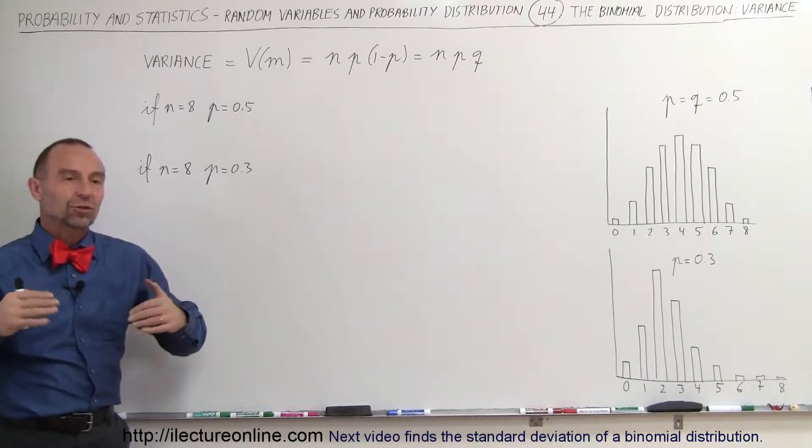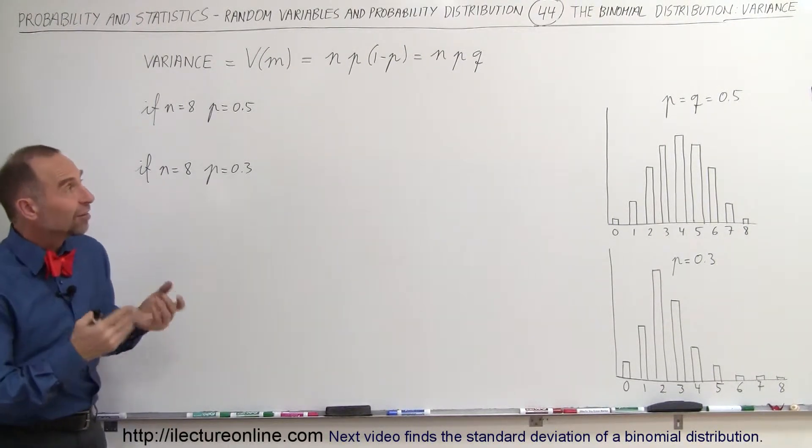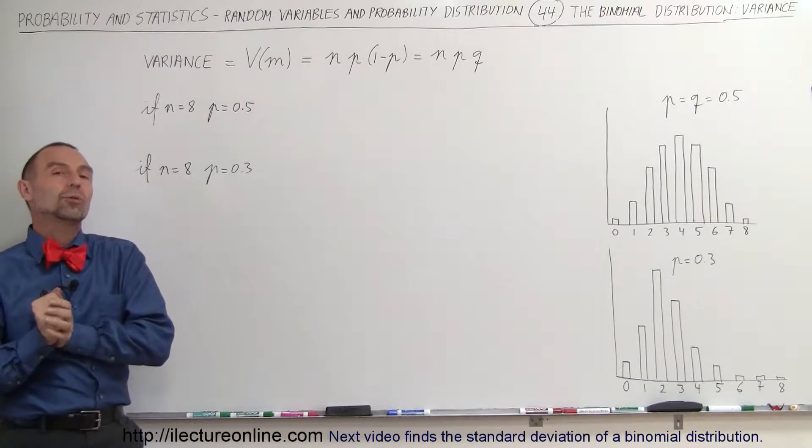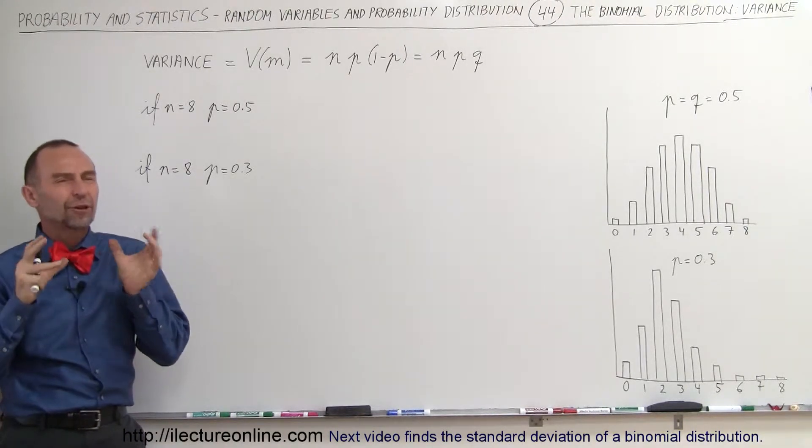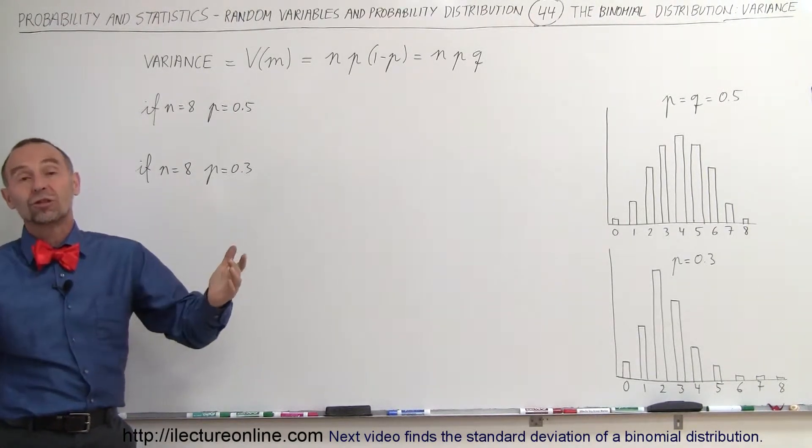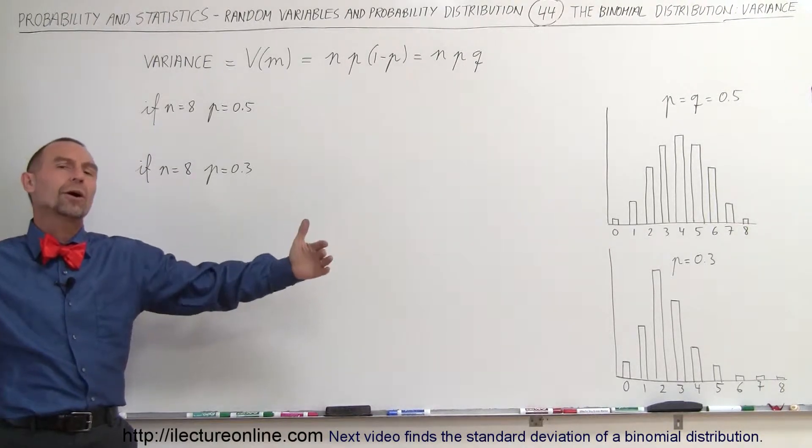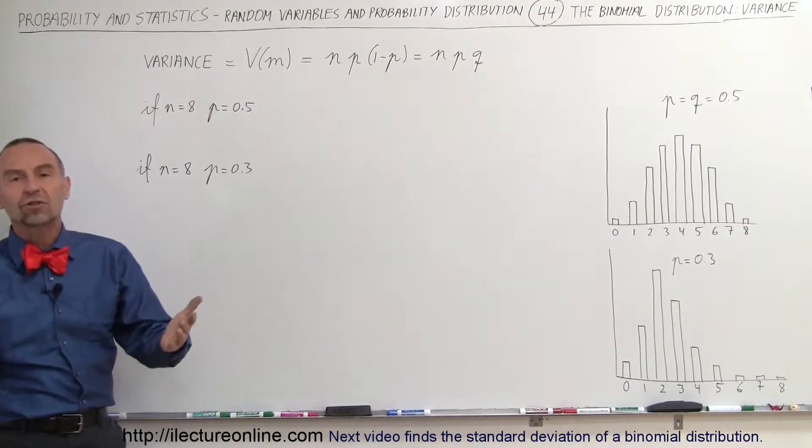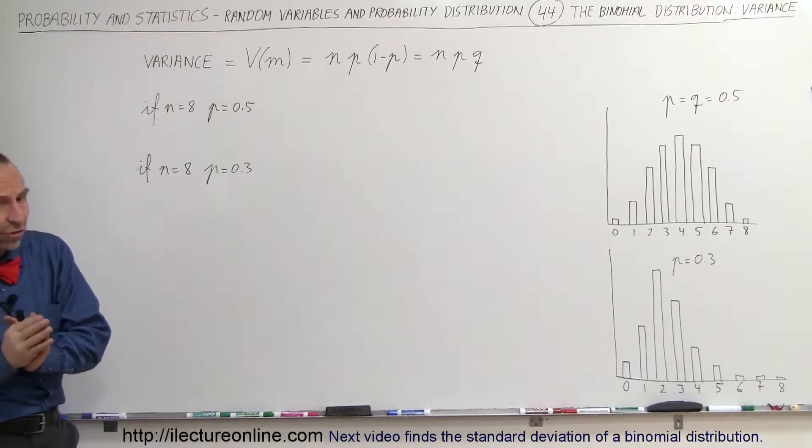Welcome to our lecture online. The next special quality we want to investigate for binomial distribution is what we call the variance. Remember, the variance on a distribution is how widely spaced apart the values are or how closely spaced together the values are.